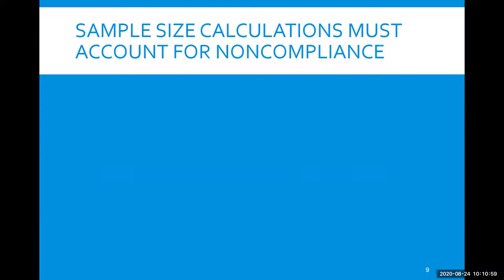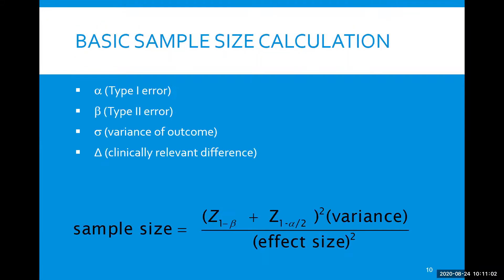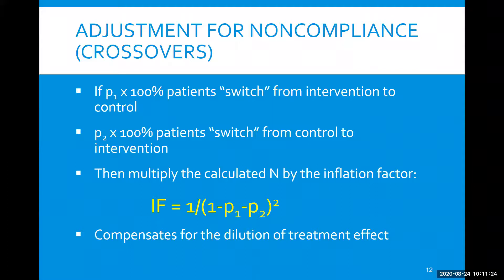Our sample size calculations need to account for noncompliance. A basic sample size calculation will involve four things: your significance level or alpha, your type 2 error rate or power, the variance of the outcome that you're measuring, and then the clinically relevant effect size. But we need to inflate this basic sample size calculation for noncompliance, using an inflation factor that depends on the expected proportion of patients switching from intervention to control or dropping out, and also the expected proportion switching from control to intervention.